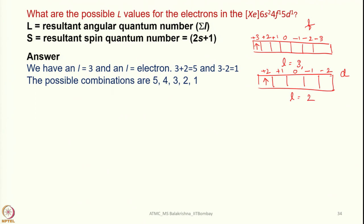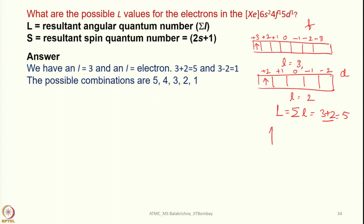The possible resultant L values come from vector coupling of L = 3 and L = 2. Arranging all possible orientations such that the resultant is a whole number gives L = 5, 4, 3, 2, 1. These are the possible L values for this electronic configuration.